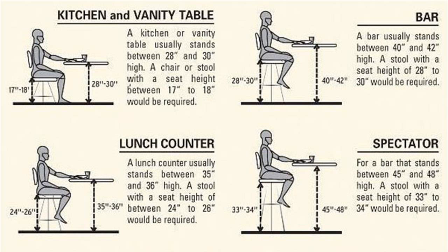Purchase counter height stools with seat heights between 23 and 28 inches from the floor, or bar height stools with seat heights between 29 and 32 inches from the floor. If you have an exceptionally high bar, you may need bar stools with seat heights between 33 and 36 inches from the floor.